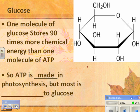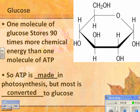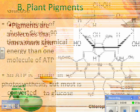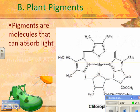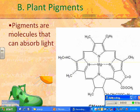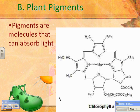ATP is made in photosynthesis, but most of it is converted into glucose. We're going to focus on how light energy is used to make ATP, and then how ATP is used to put carbon dioxides together to make glucose. First we need to talk about plant pigments. This is chlorophyll a — you don't need to memorize the structure, but know that it's a pigment, and any kind of pigment can absorb light.